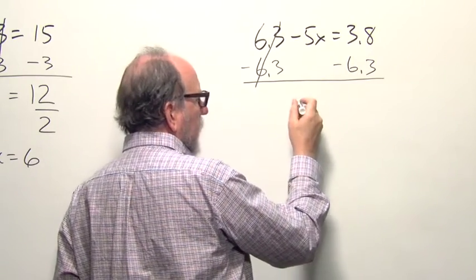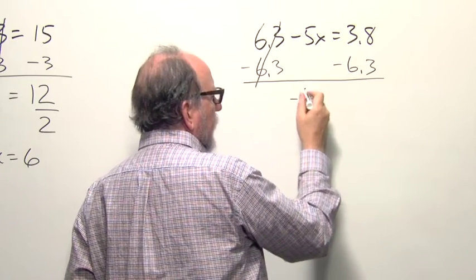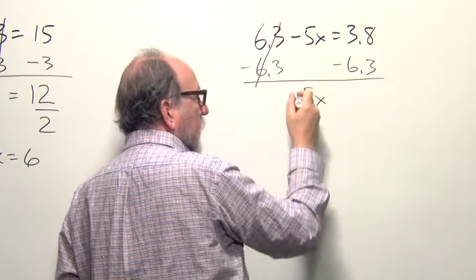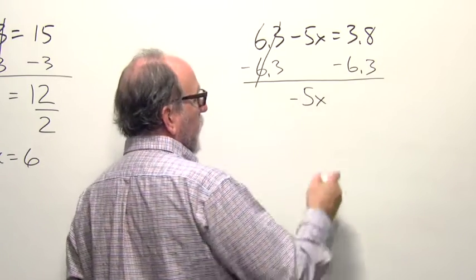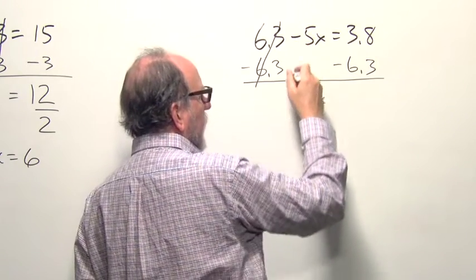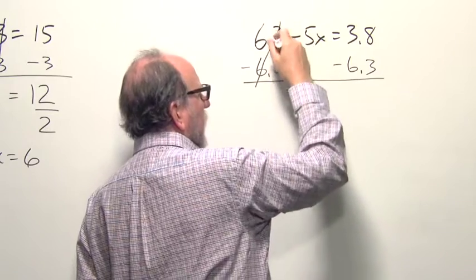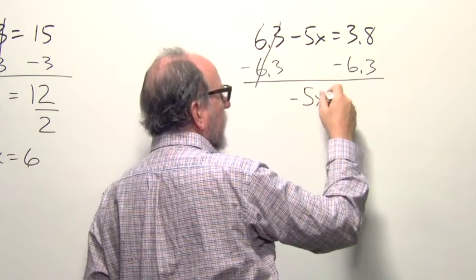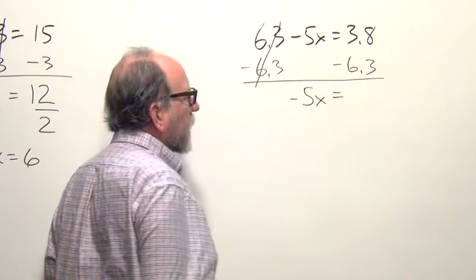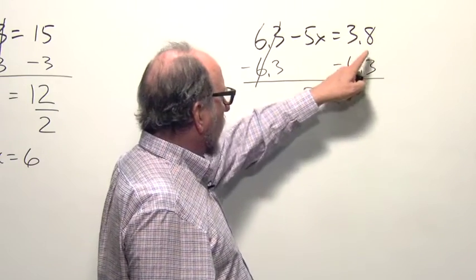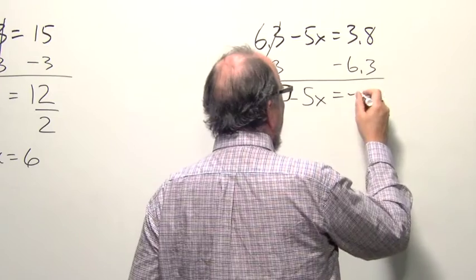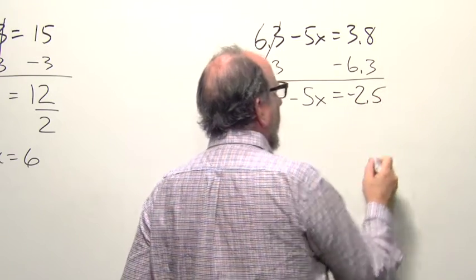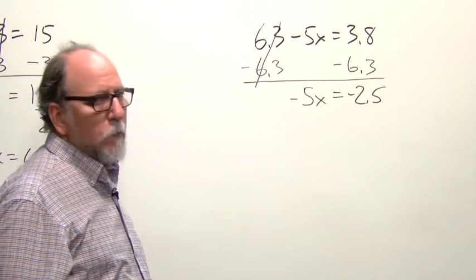So what's left is negative 5x. Don't forget to bring that negative sign with that term. A lot of people forget that or don't notice it. You got to remember that everything that's not eliminated with the subtraction has got to come down to the next line. And then we have to do 3.8 minus 6.3. If you take out your calculator, you'll see that comes out to negative 2.5.